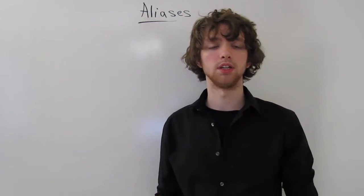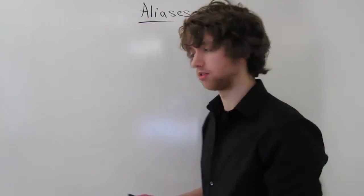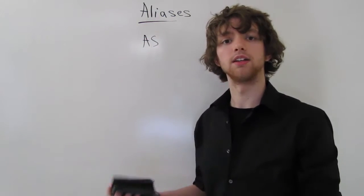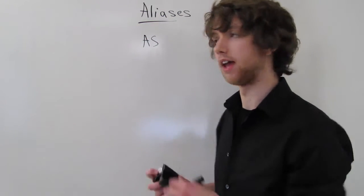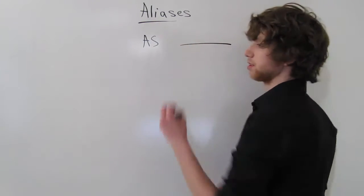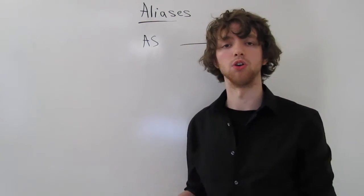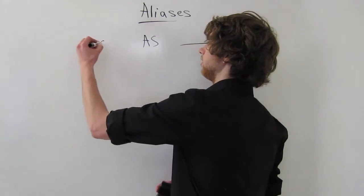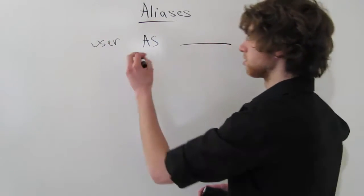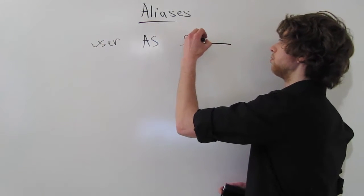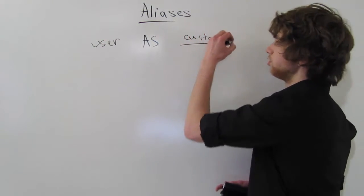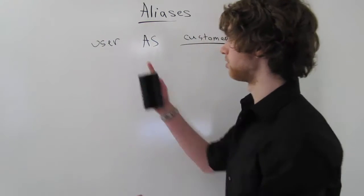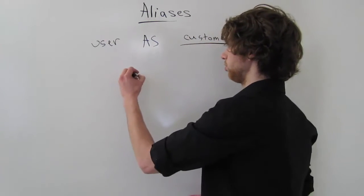So when you want to give a table an alias, you will use the AS keyword, and that's going to say anything that follows is what we want to call the table. So let's say we had that user table, and instead of using user, you wanted to say a customer. Well, then, when you use the table in the rest of the query and you use your joins, rather than using user, you can use customer.